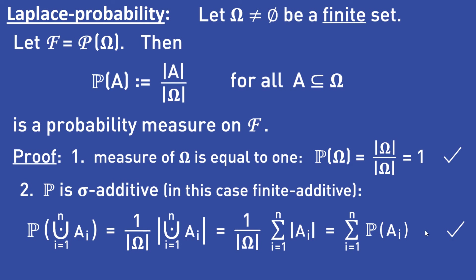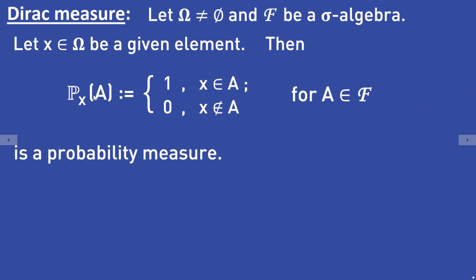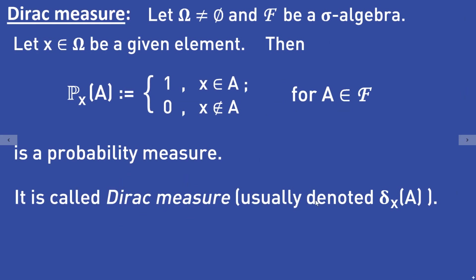Let's take a look at one last example. Let omega be some non-empty set and let F be a sigma algebra over omega. Let x be a given element in the set omega. Then we define the point measure Px of A for any set A in the sigma algebra as: Px of A equals 1 if x is in A, and 0 if x is not in A. This function is a probability measure called the Dirac measure, usually denoted with that notation. You can try yourself to show that this function is a probability measure.